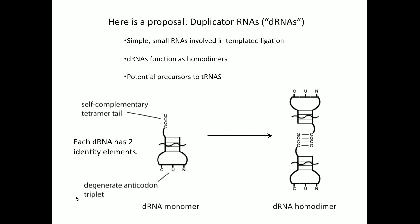We want to distinguish duplication from replication, and you'll see why. These are little RNAs — they may have been precursors of tRNA — with something like an anticodon, a degenerate triplet with a wild card in the third position. Then they have a little tail which is self-complementary. For example, CGCG will pair with itself so that you can form a homodimer of the duplicator RNAs.